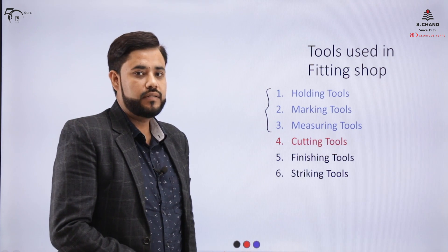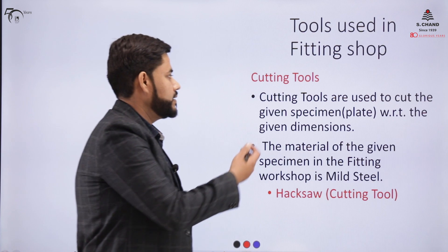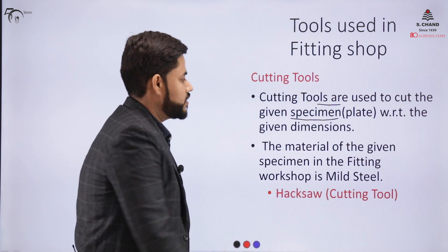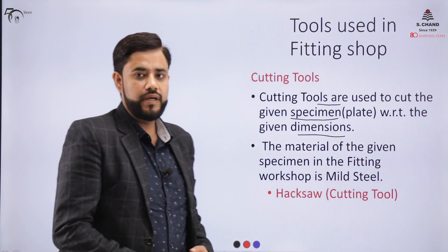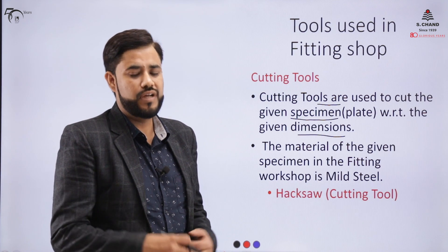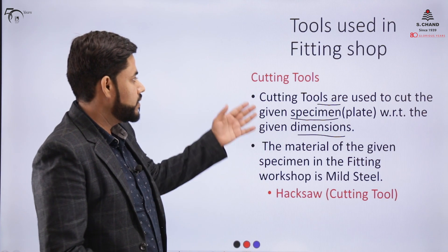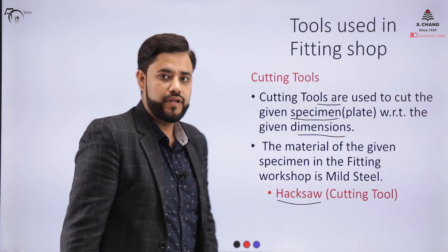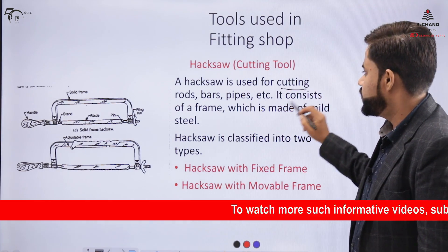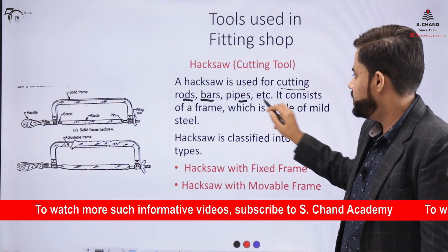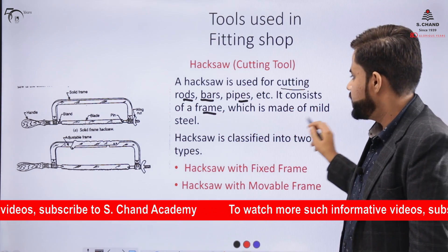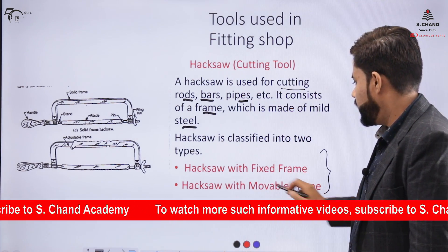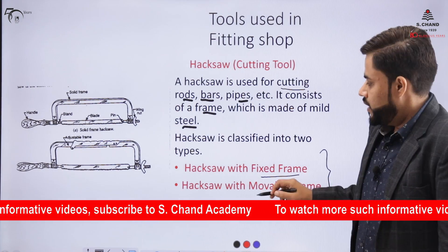Let us understand the cutting tools. A cutting tool, as the name suggests, is used to cut the given specimen with respect to given dimensions. The material generally used in the fitting shop is mild steel. The cutting tool used is the hacksaw. The hacksaw is used for cutting rods, bars, and pipes. It consists of a frame made of mild steel and is classified into two categories: one with a fixed frame and another with a movable frame.